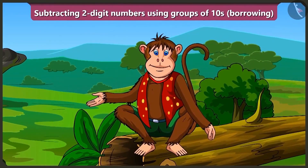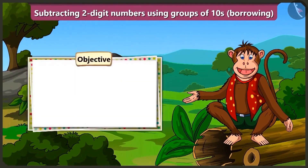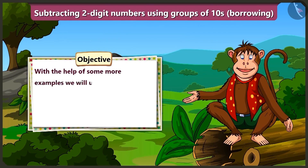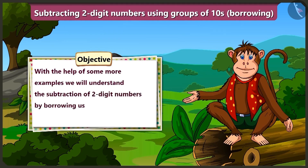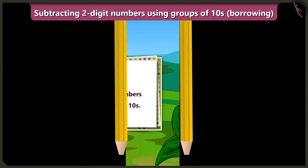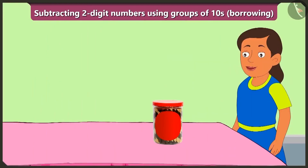Friends, today in this video, with the help of some more examples, we will try to understand much better the subtraction of two-digit numbers by borrowing using groups of tens. Bubbly's mother also bought some chocolate sticks for Bunty and Bubbly while returning home from the market. It seems that Bubbly is very happy on seeing the chocolate sticks.